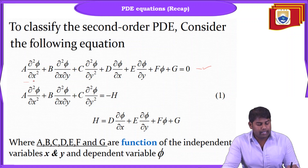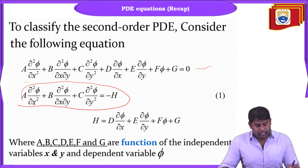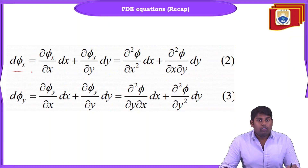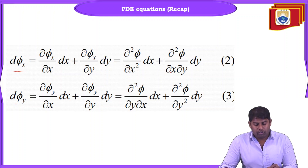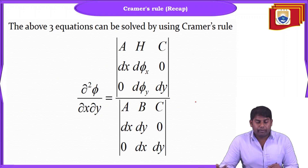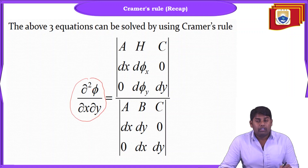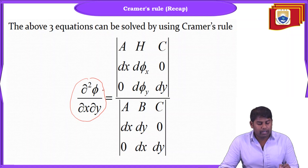We have seen only the second-order form. After that, we applied the chain rule for dφ/dx and dφ/dy, framing the second-order PDE with respect to x and y as equations 2 and 3. We then applied Cramer's rule to obtain the value of the mixed derivative, which is ∂²φ/∂x∂y. For Cramer's rule, we have the numerator term and the denominator term, and when we take the determinant we get this value.